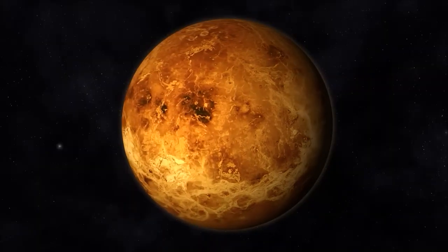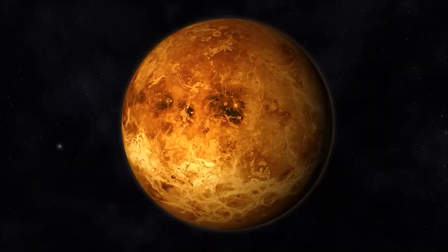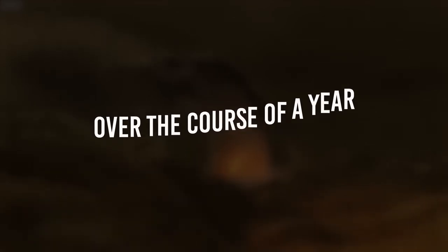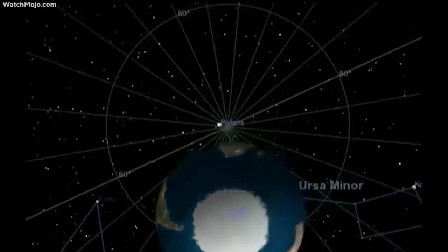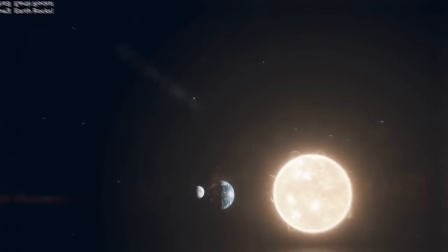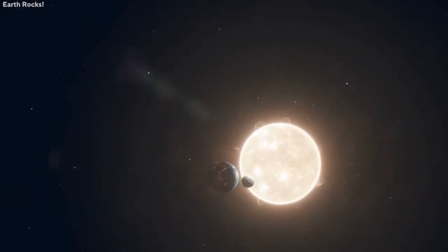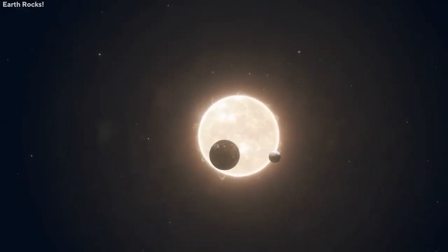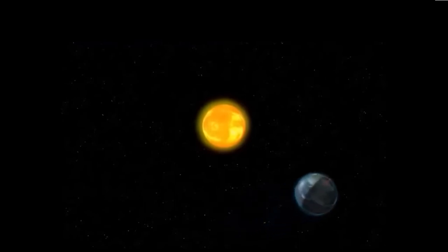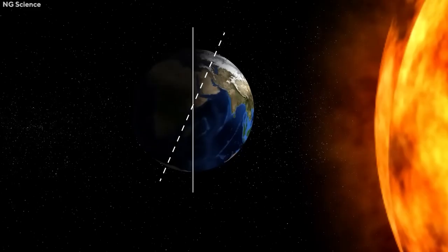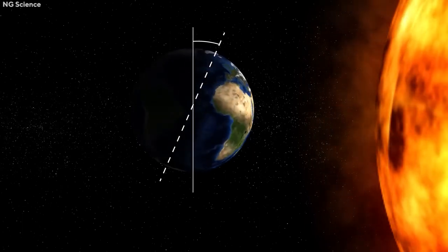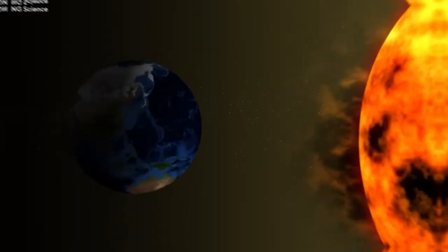The angle of tilt does not change over the course of a year. The northern axis of the Earth always points in the same direction in space — currently more or less toward Polaris, the North Star. However, as we orbit the sun, the orientation of Earth's tilt with respect to the sun changes. The northern hemisphere faces the sun for half of the year and faces away from it for the other half.